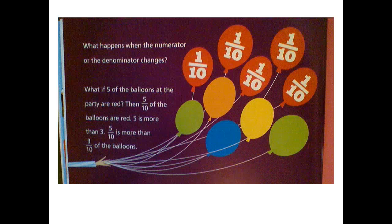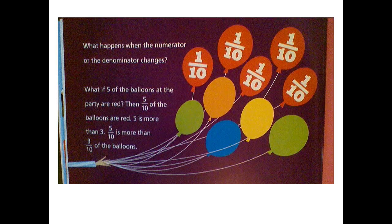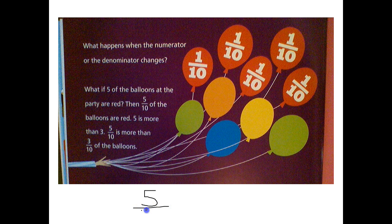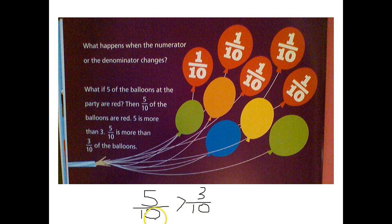What happens when the numerator or the denominator changes? What if five of the balloons at the party are red? Earlier we had three of the balloons red, but now we have five. So then five-tenths of the balloons are red. Five is more than three, so five-tenths is more than three-tenths. As we read this story, really carefully pay attention to the fact that when we are comparing these fractions, they are easy to compare because the denominators are the same.